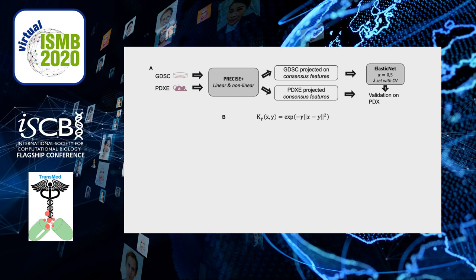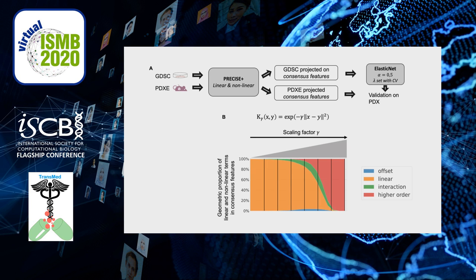We make use of the Gaussian similarity to model nonlinearities. This similarity is characterized by a single scaling factor gamma, which increases with the amount of nonlinearity. On the x-axis is the scaling factor gamma, and on the y-axis is the amount of linearity, second-order interaction, and higher-order interaction for the consensus features on average. We observe that when gamma increases, the amount of nonlinearity decreases and the interaction increases up to a certain point, so gamma is a good measure of nonlinearities.